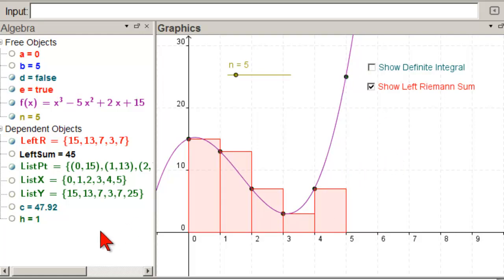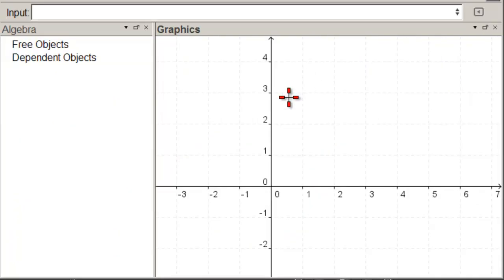The hardest thing is to do this left R, that sequence. Everything else is very basic. So here is our blank worksheet. We put the input bar at the top so that we can see it, and the first thing we need to do is input our function.